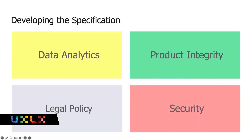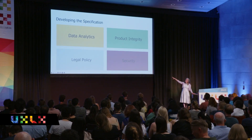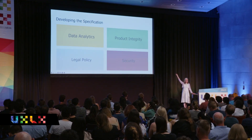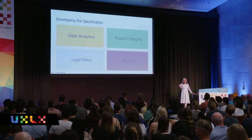When we were developing the specification, I like to call us the Justice League. We had data analytics — that was Aquaman, swimming in the data. We had Batman, the legal enforcer. Security was Superman, he's strong. And I was Wonder Woman, involved in product integrity — basically making sure that all of the policies underlying data, legal, and security are actually realized and communicated out to the user.